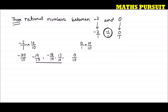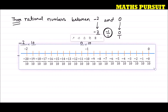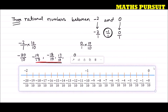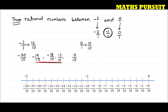Let us represent these three rational numbers on a number line. I have prepared a number line where I have represented these three rational numbers — it is always advisable to represent rational numbers on a number line. Here minus 2 is on the left and 0 is on the right.